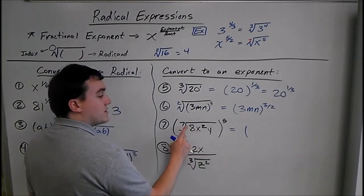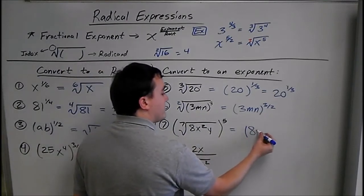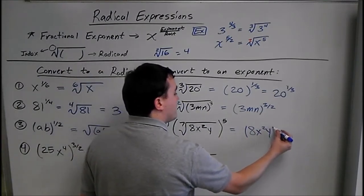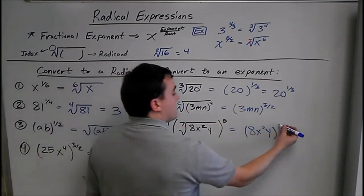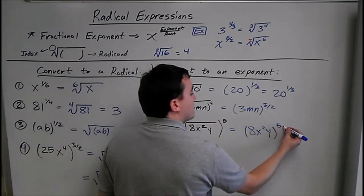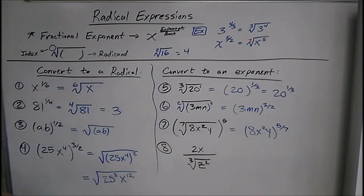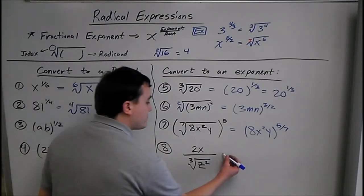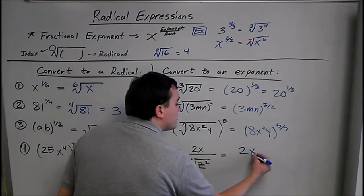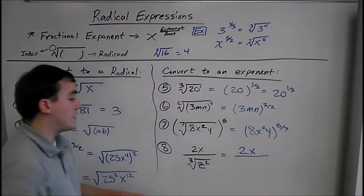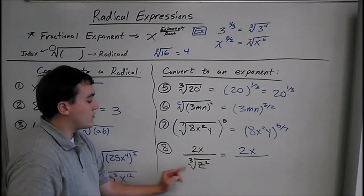The inside of this radical — the exponent and the root still apply. We have 8x squared y to the 5 divided by 7: exponent over root.